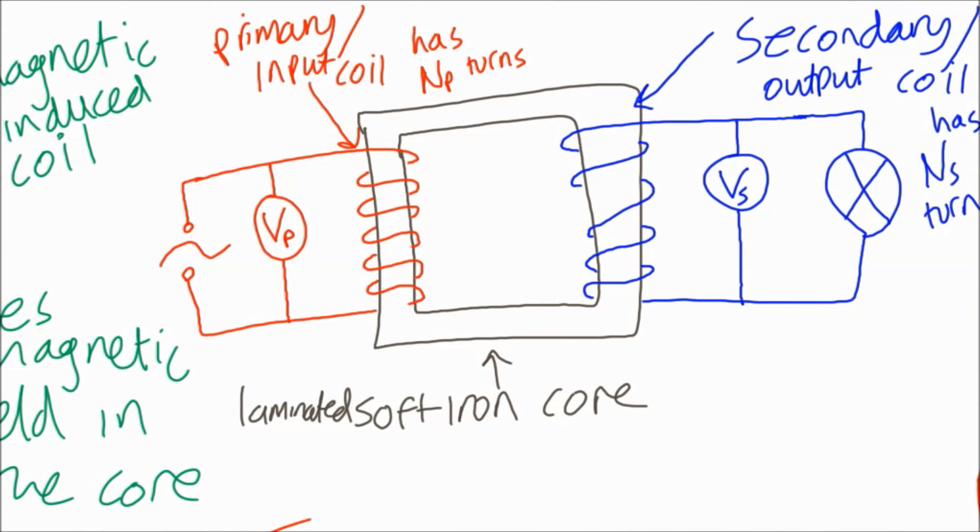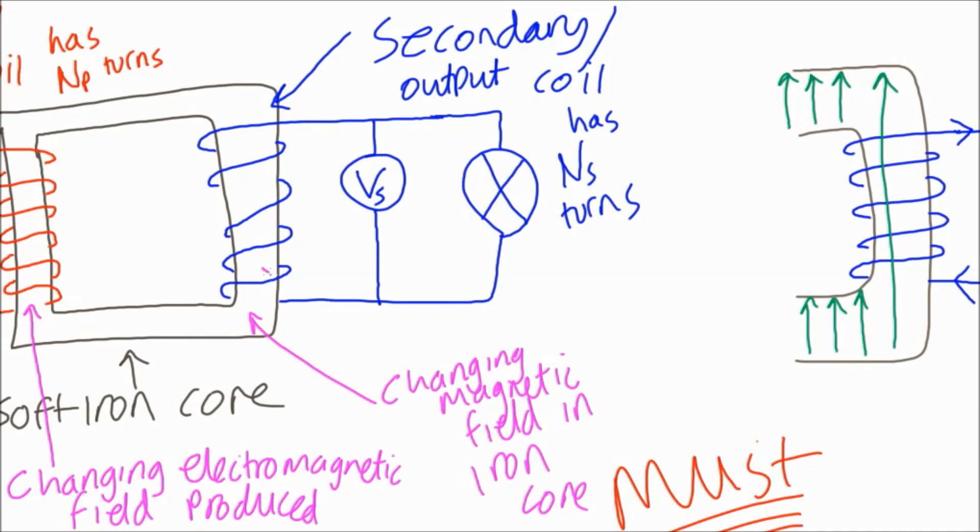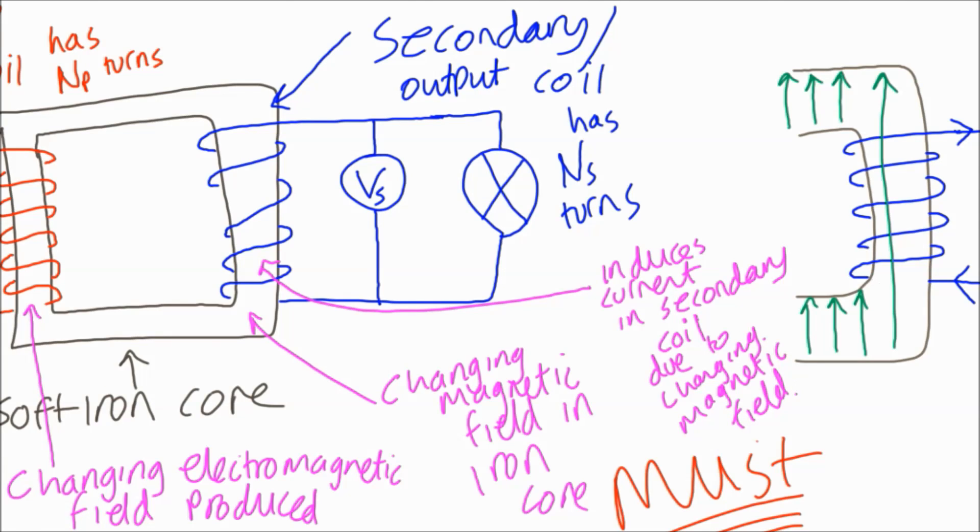So to recap: primary coil has a changing electromagnetic field. That causes a changing magnetic field in the iron core, and the iron core is connected to the secondary coil. So the secondary coil sees a changing magnetic field which causes current to be induced in the secondary coil. We get electricity, electrical current in the secondary coil despite the fact the primary coil is not electrically connected to it.